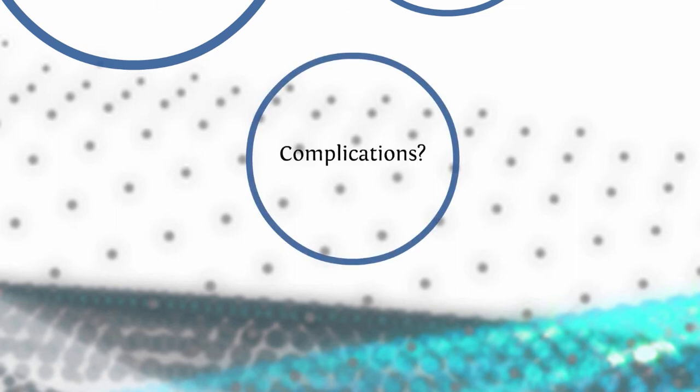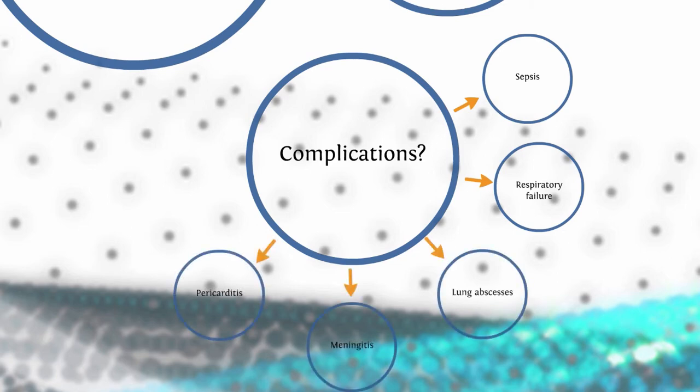Now, let's say that things did go poorly with our gentleman, with Bob, and that he developed some complications. What kind of complications in the worst case scenario could develop? Well, you could get sepsis, respiratory failure, lung abscesses, meningitis, pericarditis, or endocarditis. Any of these types of complications are going to be situations that, as a nurse, you're going to have to eventually learn how to deal with. This is why we need to stay on top of pneumonia. We have to treat it as quickly as possible once we realize what we're dealing with.